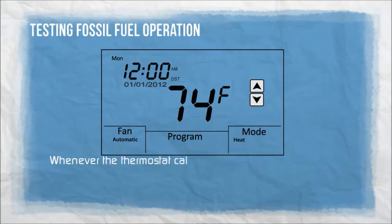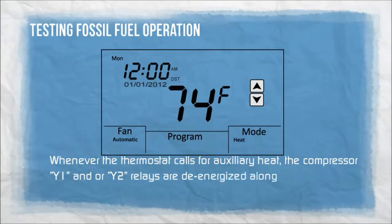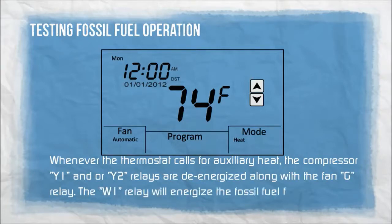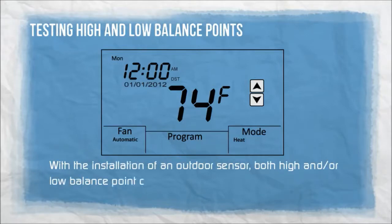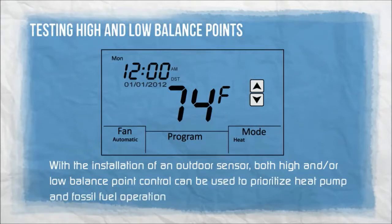Whenever the thermostat calls for auxiliary heat, the compressor Y1 and/or Y2 relays are de-energized along with the fan G relay. The W1 relay will energize the fossil fuel furnace. With the installation of an outdoor sensor, both high and/or low balance point control can be used to prioritize heat pump and fossil fuel operation based on a selected outdoor temperature.